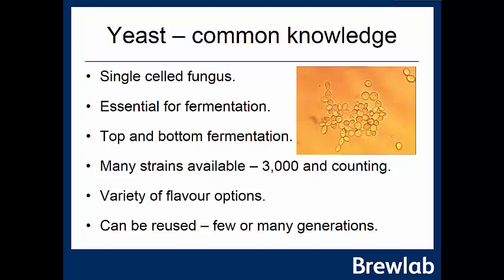This is general background. We're talking about yeast as a single-celled fungus — essential for fermentation. We can get top and bottom fermentations according to not just ale or lager but the way it's been treated, developed, and evolved within our fermenters. We've got many strains available — around 3,000 — that we can isolate from various sources. There are a variety of flavour options, and we can reuse yeast for some generations until there's contamination or mutation causing a drift in characteristics.